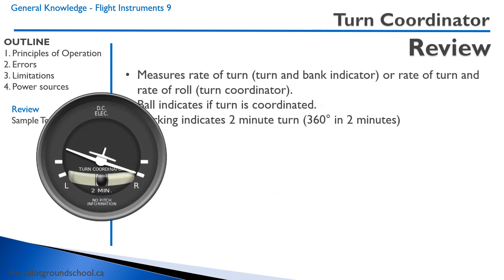The turn coordinator measures the rate of turn and rate of roll, whereas the turn and bank indicator only measures the rate of turn. The ball indicates that the turn is coordinated. The marking on these instruments indicates a two-minute turn, meaning a 360-degree turn in two minutes.